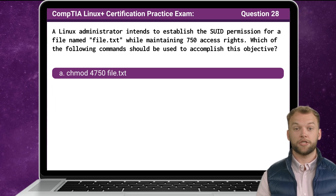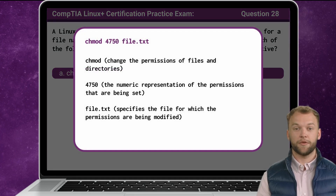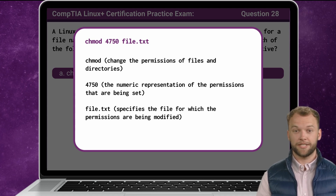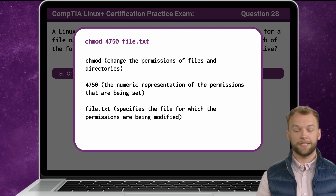The answer is A: chmod 4750 file.txt. The chmod command is used in Linux to change the permissions of files and directories. 4750 is the numeric representation of the permissions being set — the first digit 4 sets the set user ID permission, and the next three digits 750 represent the access rights for the owner, group, and others respectively. By using chmod 4750 file.txt, the administrator effectively sets the set user ID permission while maintaining the specified access rights of 750.